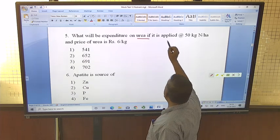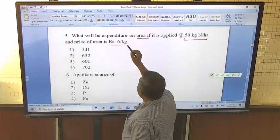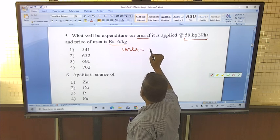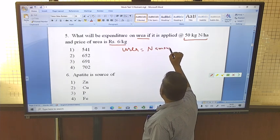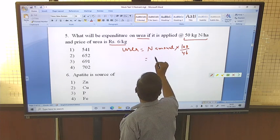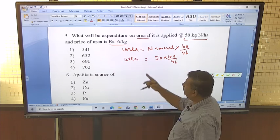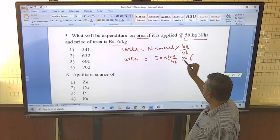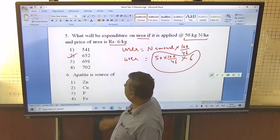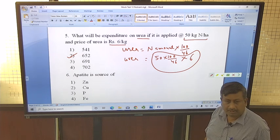What will be expenditure on urea if it is applied at the rate of 50 kg nitrogen per hectare? And price of urea is Rs. 6 per kg. First calculate amount of urea. Amount of urea is calculated as nitrogen amount then multiplied by 100 and divided by 46. So amount is 50 into 100 divided by 46. This is urea amount in kg and price is 6, so multiply it by 6. So this is answer. By solving, it is 652 rupees. This is based on simple calculation how to convert nitrogen into urea.